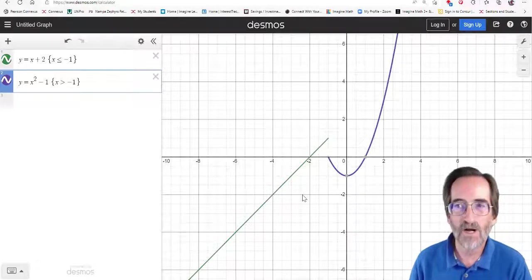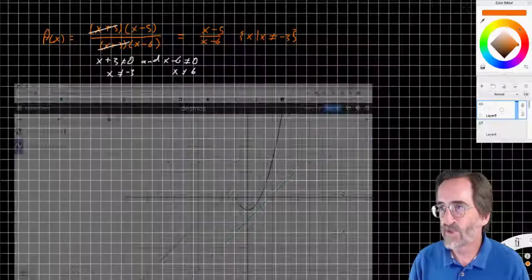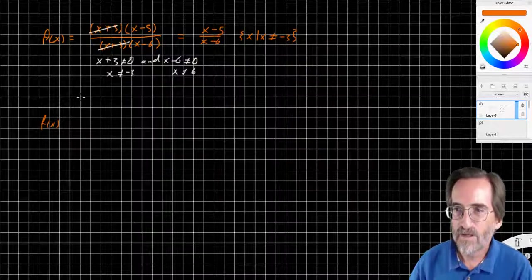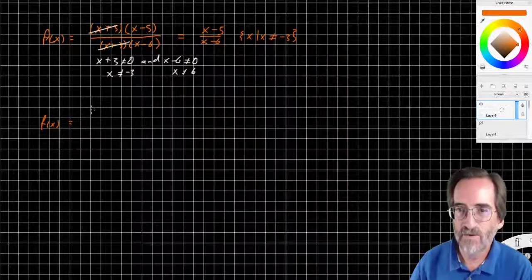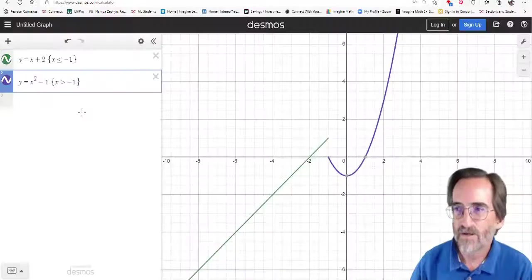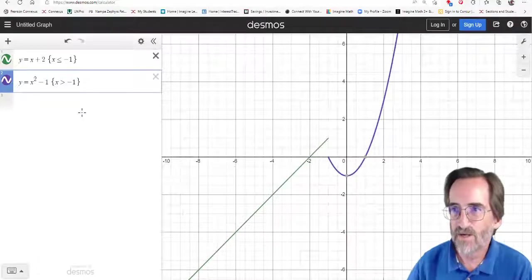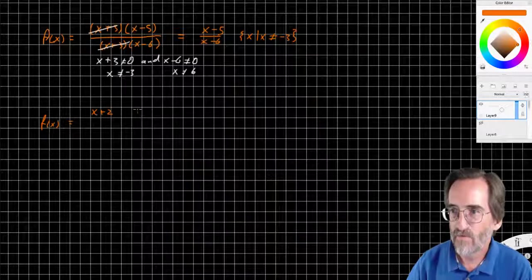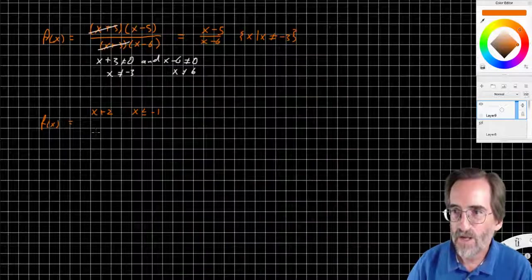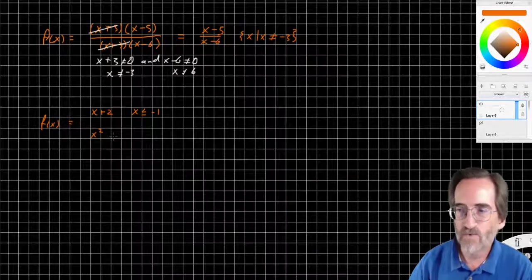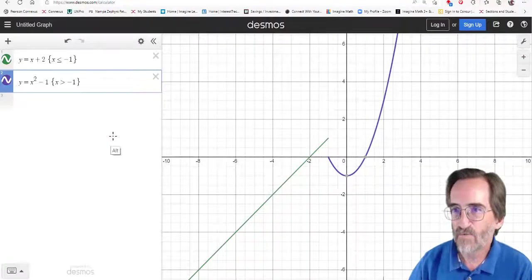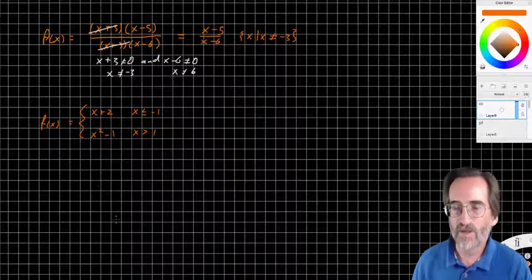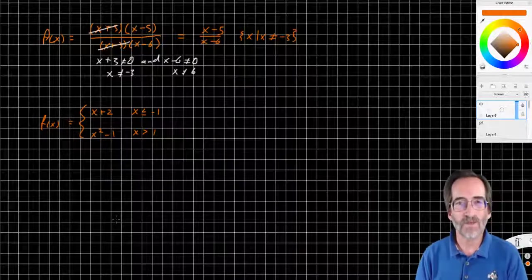That is a jump discontinuity in real life. And the way I would write that on my paper is this. f of x equals x+2 for x less than or equal to negative 1, and x squared minus 1 for x greater than negative 1. And we would indicate it like that with a big brace on it. That's the piecewise function.